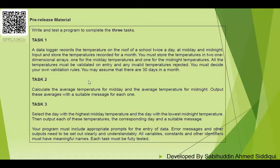All temperatures must be validated on entry and any invalid temperatures rejected. You must decide your own validation rules. You may assume there are 30 days in a month. So you declare two separate arrays — one for midday temperatures and one for midnight temperatures — each with a range of 30 days.